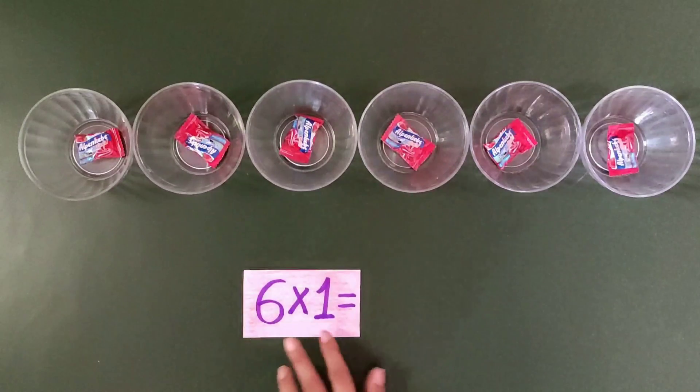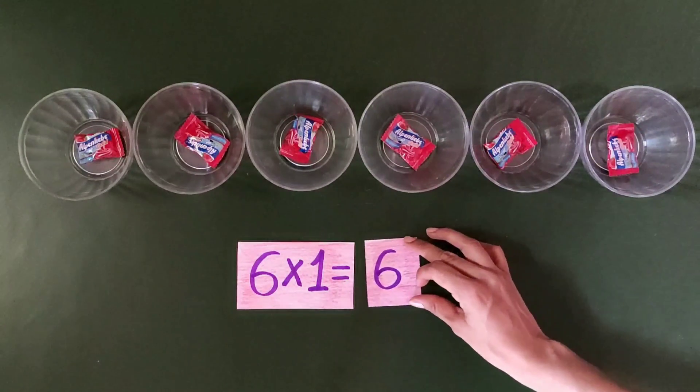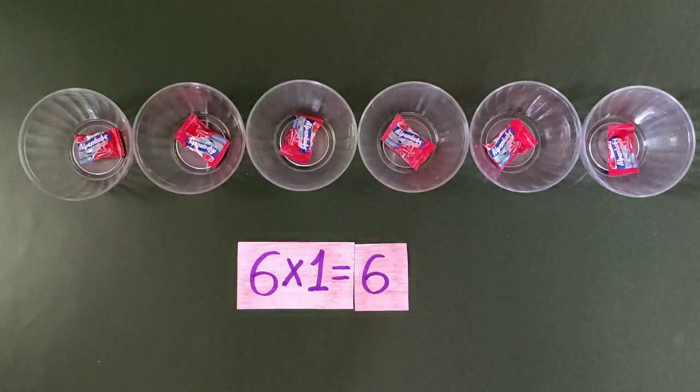So that means when we take 6 balls and 1 candy in each, the total count of candies we get is 6. So we can say 6 multiplied by 1 equals 6.